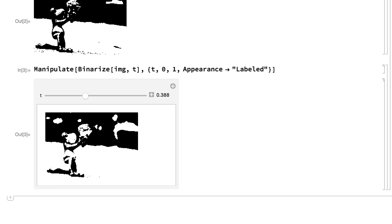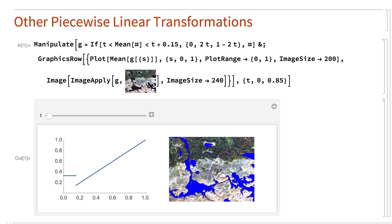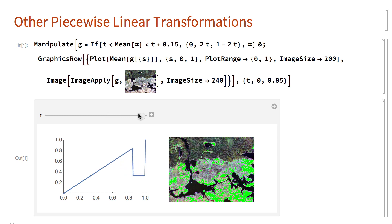There are many piecewise linear transformations that can be useful in different situations. For example, here is another Manipulate, this time with a color image, where pixels outside of a selected brightness range are left unchanged and pixels inside that range are replaced by a contrasting color. The image in this example is a satellite image, in which adjusting the selected range has the effect of highlighting certain geographic features in the image.